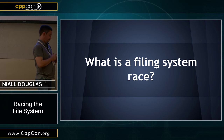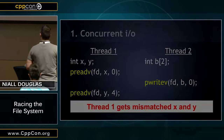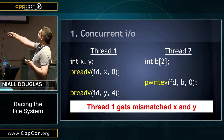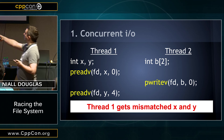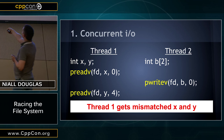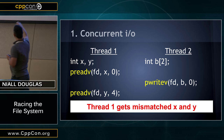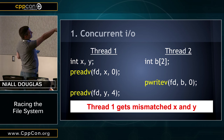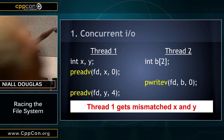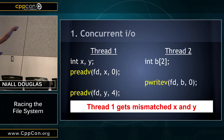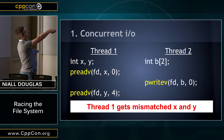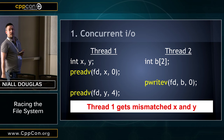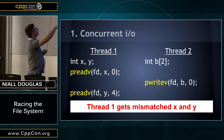So what is a filing system race? Almost exactly the same. Thread one does a preadv from a file descriptor into an int X from position zero, then later reads Y from position four of the same descriptor. From another thread, a pwritev comes in between these two reads, overwriting the first eight bytes of the file. The result is that X and Y no longer match — thread one sees one version of X and a different version of Y: a torn read.